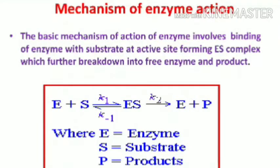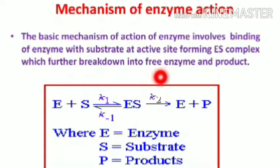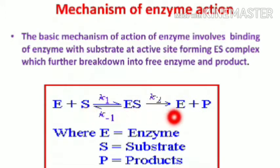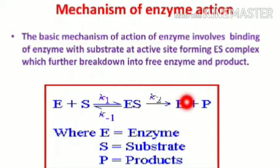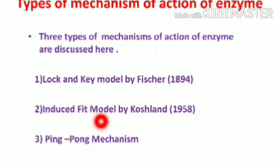The topic is the mechanism of action of enzymes. The mechanism involves the binding of enzyme and substrate forming an ES complex. The substrate binds to the active sites of the enzyme, forming the ES complex, and converts the substrate into the product, releasing the enzyme as it is. The three major types we will discuss are: the Lock and Key model by Fischer, the Induced Fit model by Koshland, and the Ping Pong mechanism.